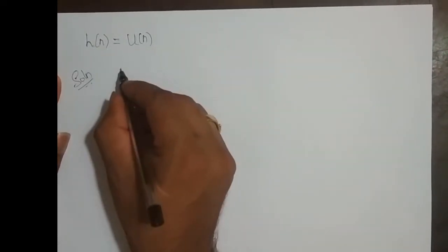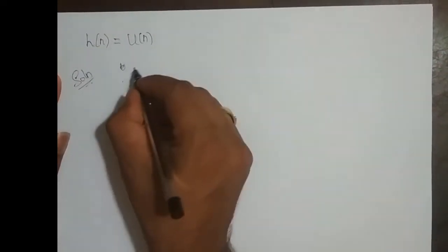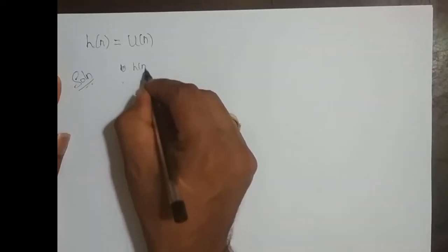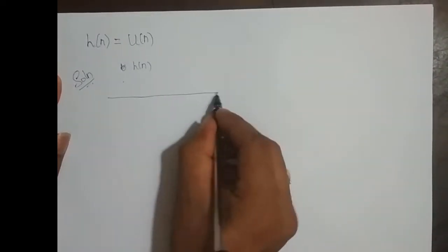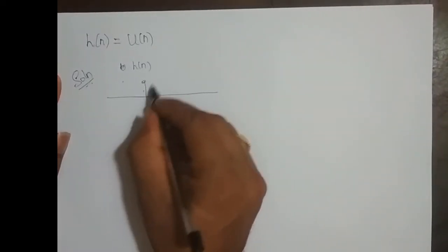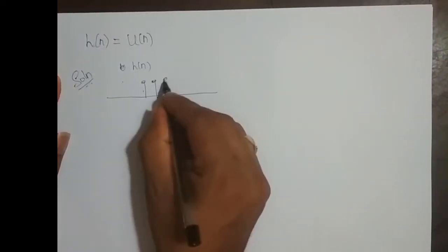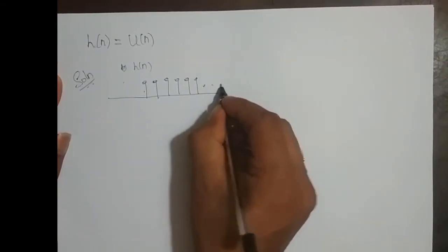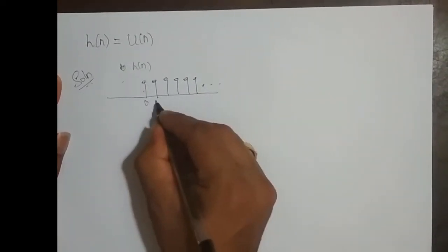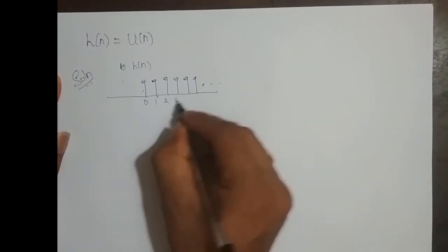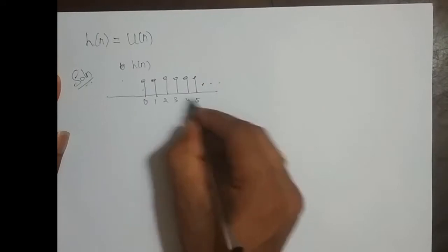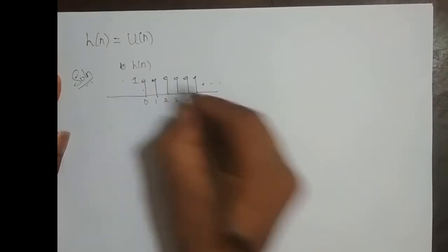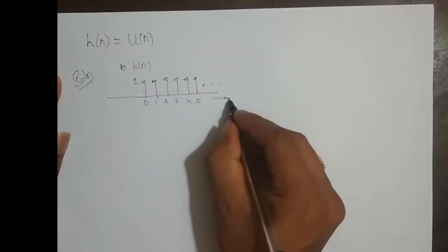First, we shall sketch the signal. h of n is a unit step function. So, the unit step function looks like this: it starts from 0 and goes till infinity. Its amplitude is 1, and this is n.